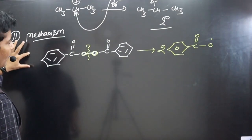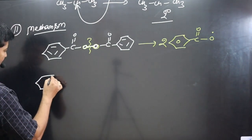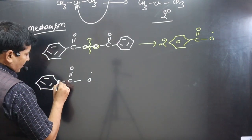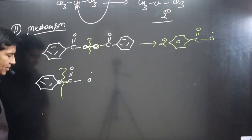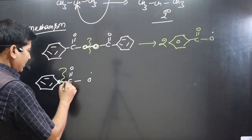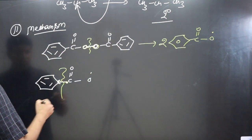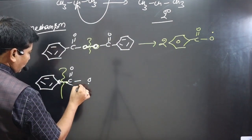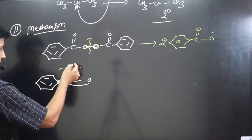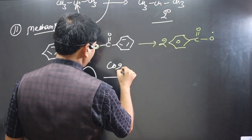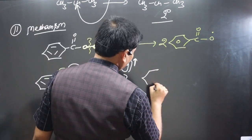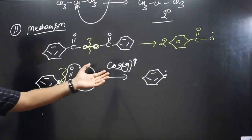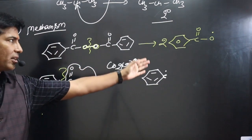So the benzoyloxy radical loses CO2 to give a phenyl radical (benzene ring with a carbon dot). This carbon radical is reactive since its valency is not satisfied. It then attacks HBr — in free radical reactions we do not consider electronegativity differences; electrons are equally distributed. The H–Br bond breaks homolytically: one dot goes to H, one to Br. The phenyl radical combines with H, satisfying its valency, and we get a Br• radical.